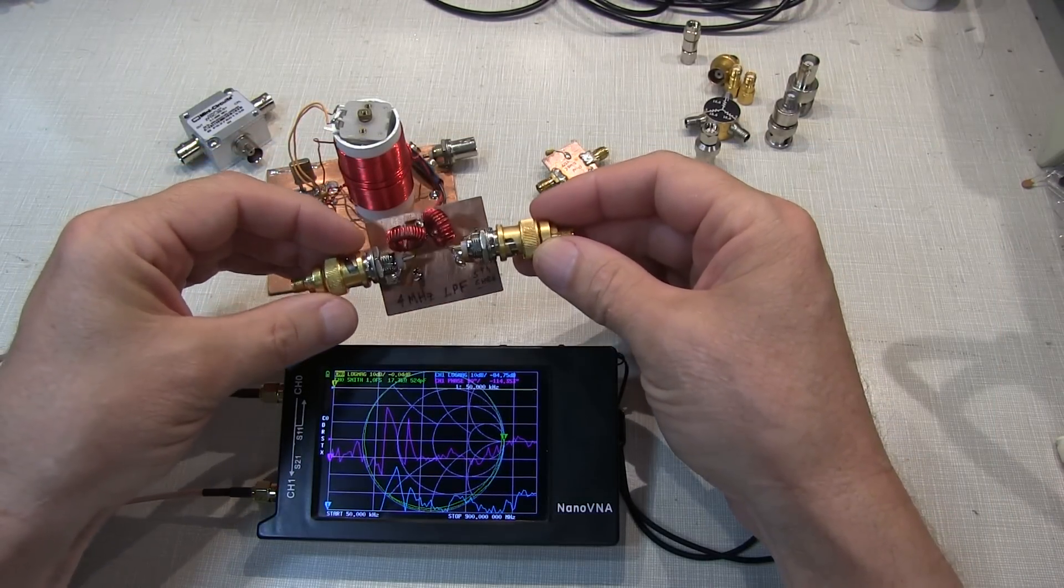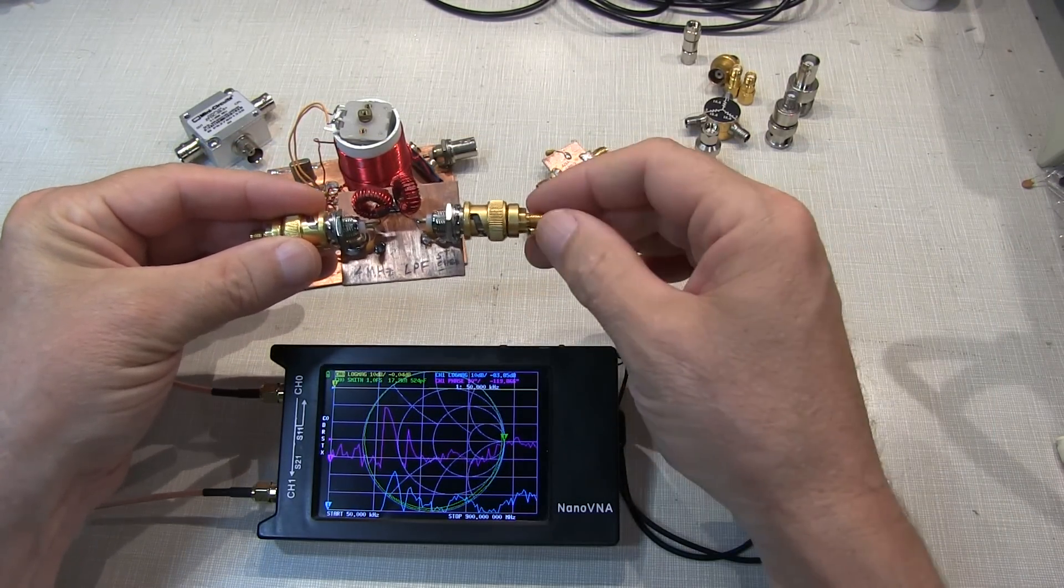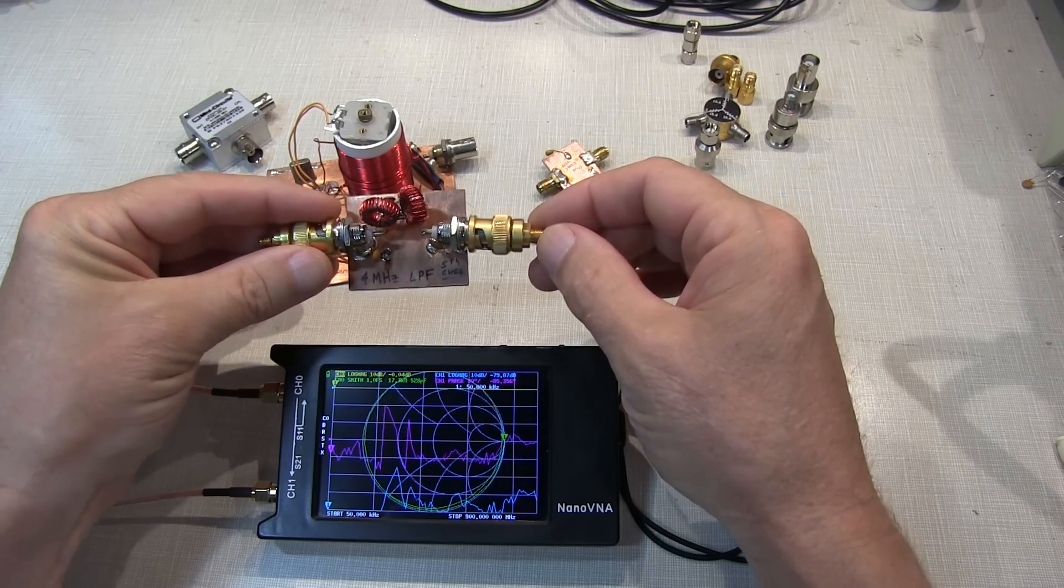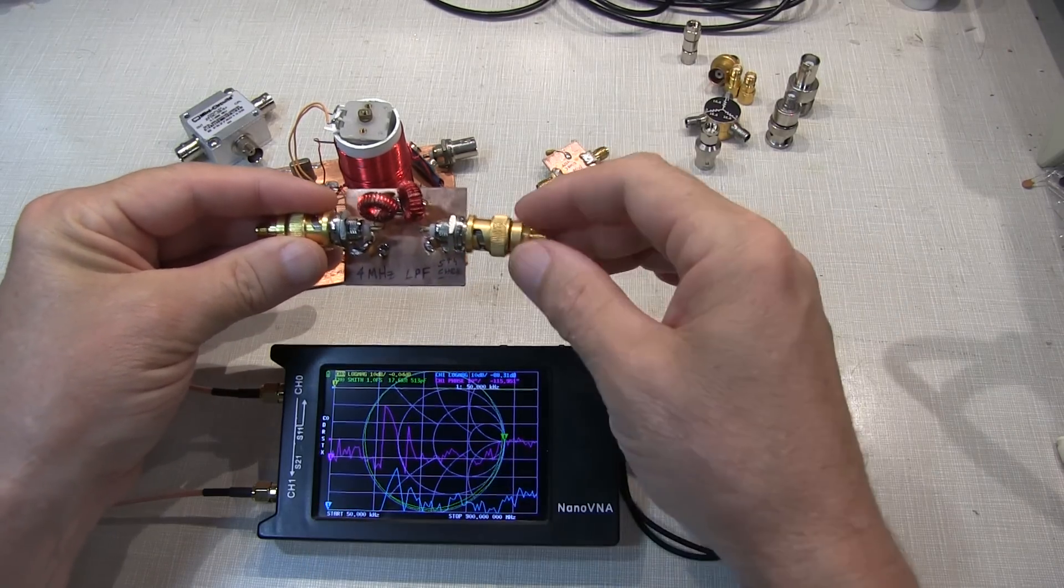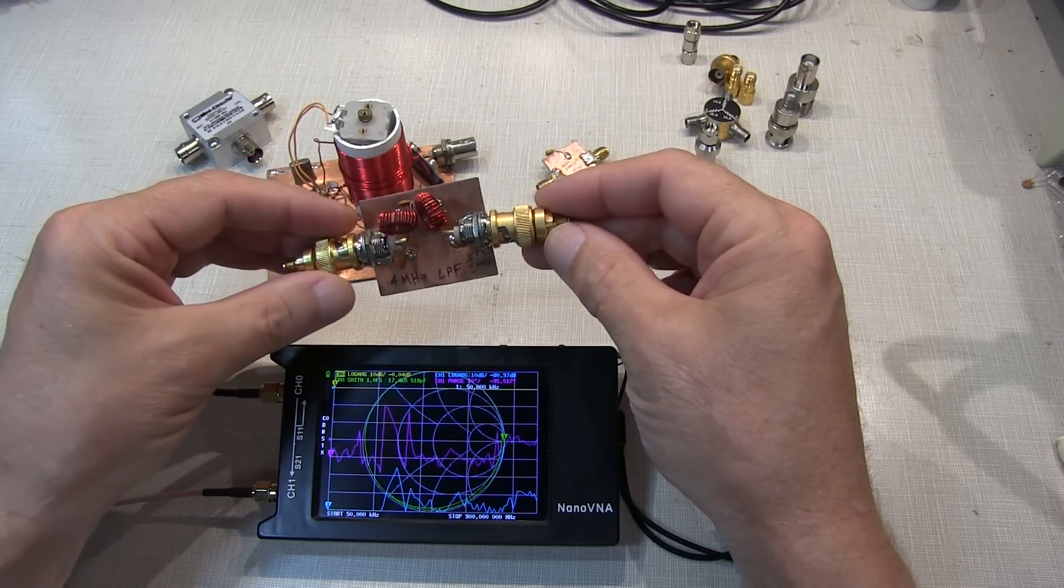The process will be quite similar to the previous video that showed how to measure an antenna. We first select which traces we want to have displayed, configure the source frequency range we want to measure over, then calibrate the device, and then go measure our part. So let's get started.